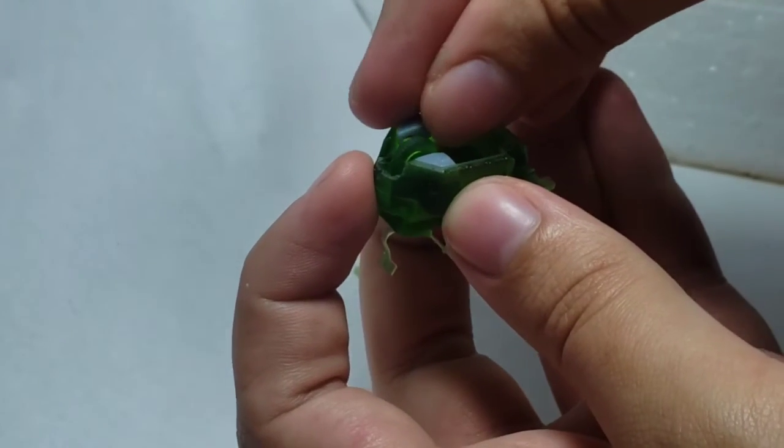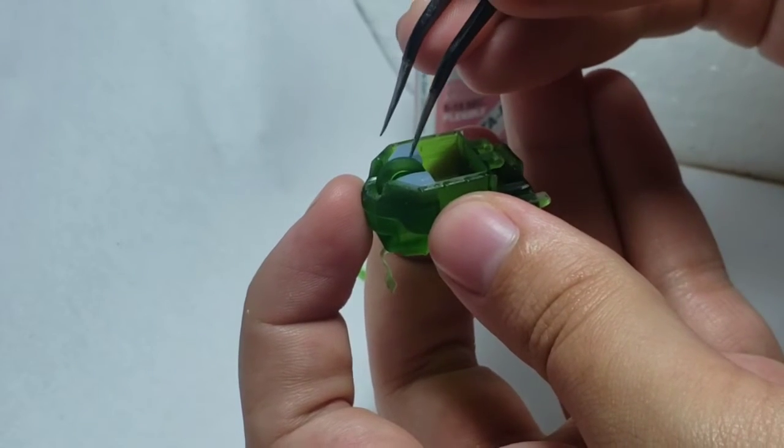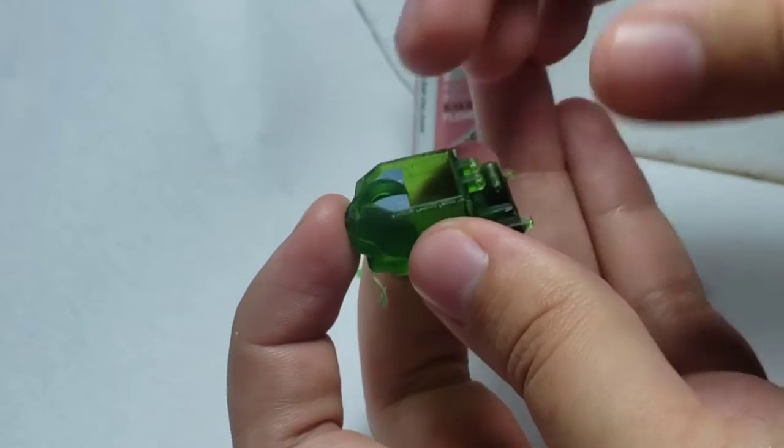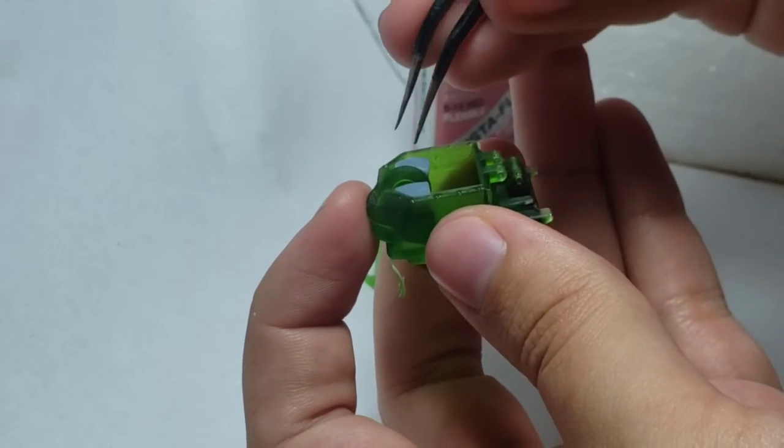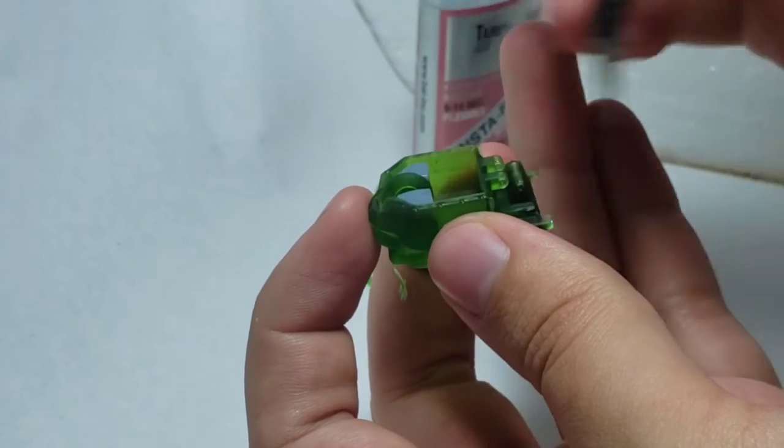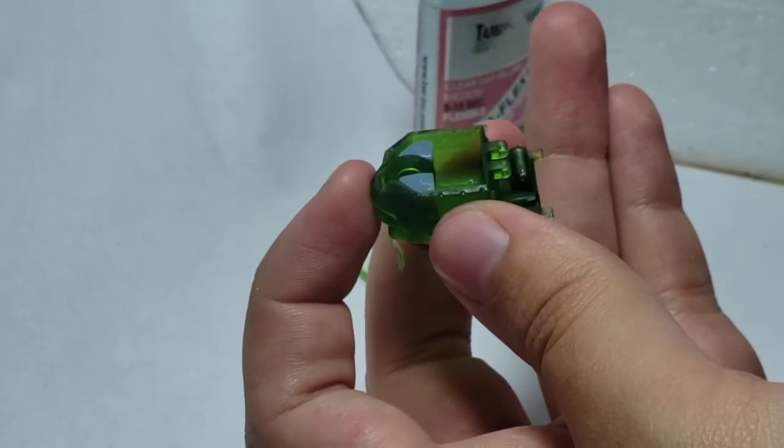Do the same for the other one. You can use tweezers or your hands, but using tweezers makes it a bit easier. Now you can see the wheel rolls in there. When you glue this down, make sure you roll the wheel very gently so it doesn't seize up, and then it'll roll nice and well.